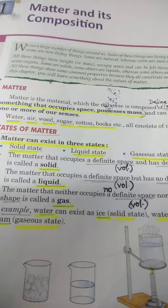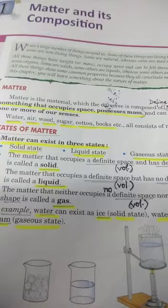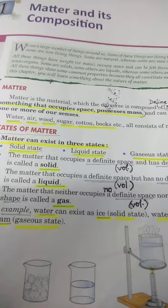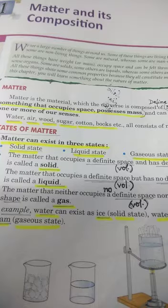For example, if we take water, we know that it exists in three states. Water can exist as ice, which is the solid state of water. Water can also exist in liquid form as water, and it can exist in gaseous state as steam.